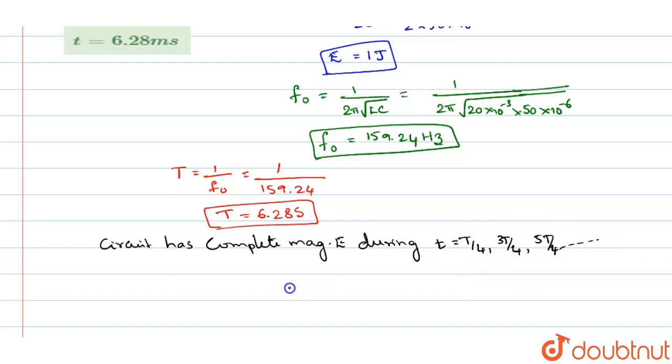Now, time period T we have calculated to 6.28 seconds. So substituting that, let us take only the first case where it becomes maximum. So T is 6.28 divided by 4.